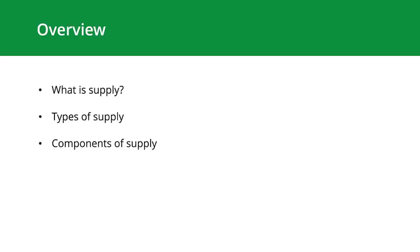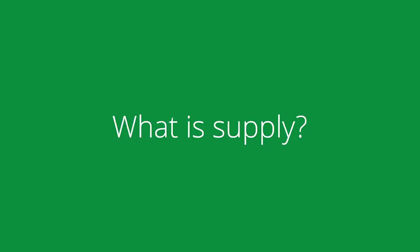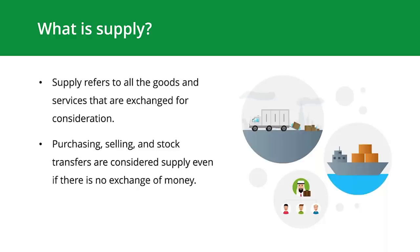This session is divided into three main parts where we'll discuss supply, the types of supply, and the components of supply. Supply refers to all the goods and services that are exchanged for consideration. A supply has taken place when there is a transaction between two people, of which at least one is a registered taxpayer. This includes buying goods to sell them, outsourcing a service, and importing and exporting goods. Purchasing, selling, and stock transfers are considered supplies even if there is no exchange of money.